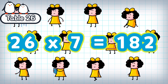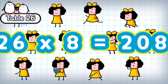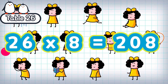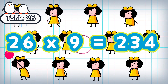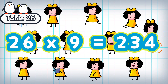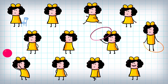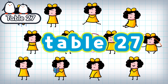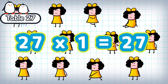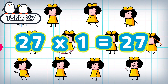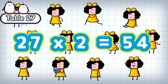26 times 7 is 182. 26 times 8 is 208. 26 times 9 is 234. Table 27. 27 times 1 is 27. 27 times 2 is 54.